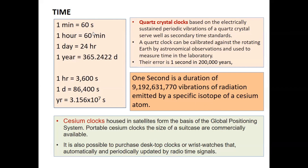The basic standard for time is the second. One minute is 60 seconds, one hour is 60 minutes, one day is 24 hours, and one year is approximately 365.2422 days. The year is roughly 3.156 × 10⁷ seconds.